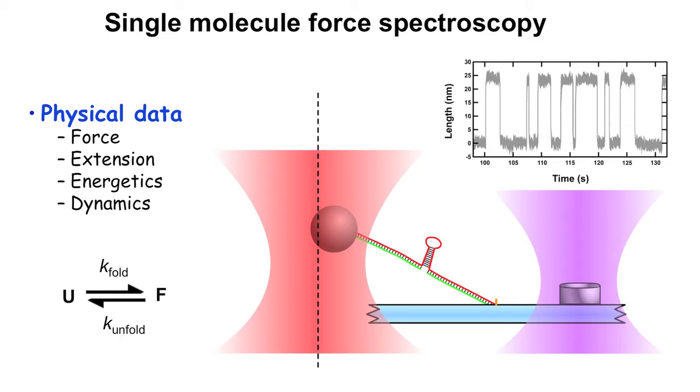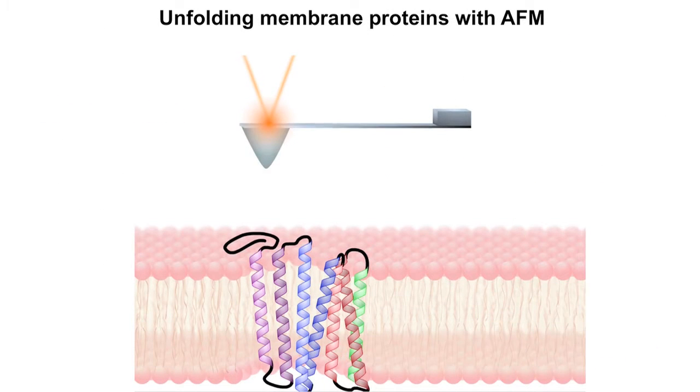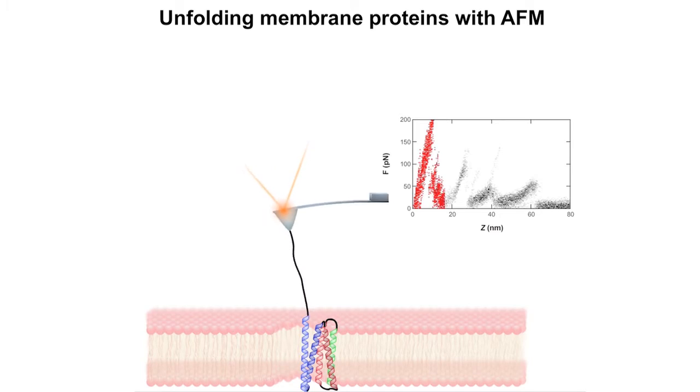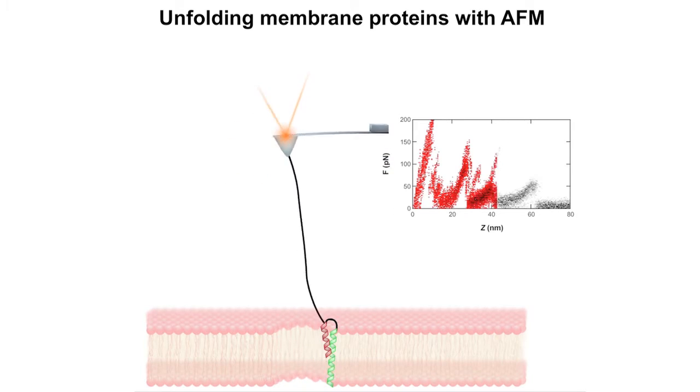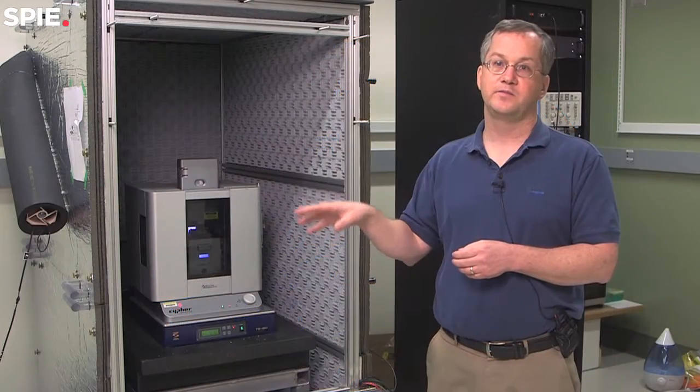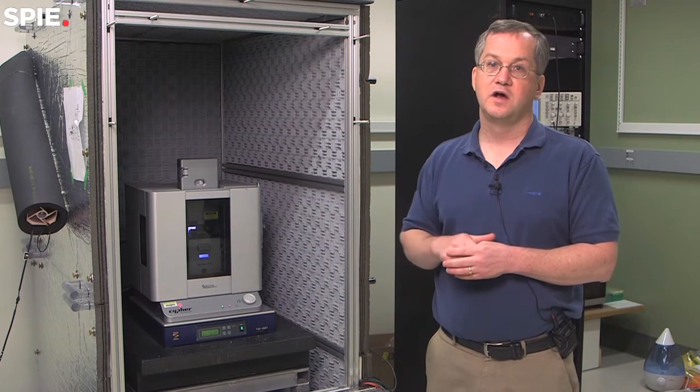The focus of our research in the last five years, at least on the AFM side, has been improving our ability to watch proteins fold and unfold and make better measurements. These metrological improvements not only improve our ability to measure protein folding and unfolding, but also have an impact on the broader field. If we're improving the ability to do bio-AFM, that broadly affects a lot of areas.